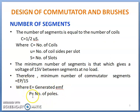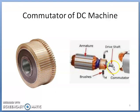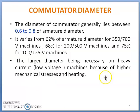The minimum number of commutator segments is taken as EP divided by 15, where E is the generated EMF and P is the number of poles. Between two commutator segments, mica is used as insulation material. The commutator is fixed at one end of the armature, and brushes are used to supply current to the external circuit — current is collected from the rotating commutator via the brushes.